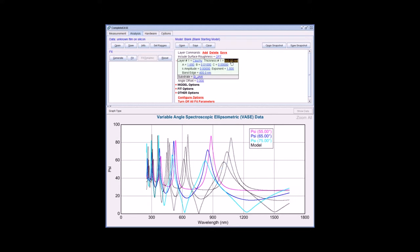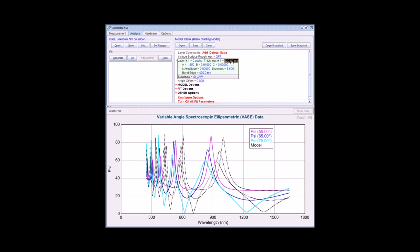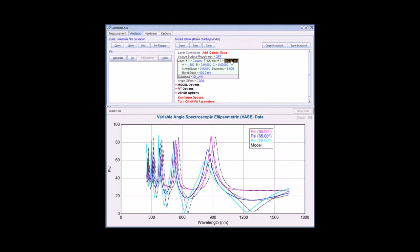I'm going to adjust my thickness again to compensate. So now with a thickness of around 460 nanometers and index around 1.65, that's the Cauchy A parameter approximately, you can see that the data are a very close match, both in height and in number of oscillations.